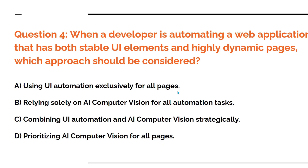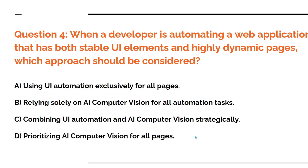Question four: when a developer is automating a web application that has both stable UI elements and highly dynamic pages — a combination of both — which approach should be considered? Option A: using UI automation exclusively for all pages. Option C: combining UI automation and AI computer vision for all pages. Pause this video and start commenting.